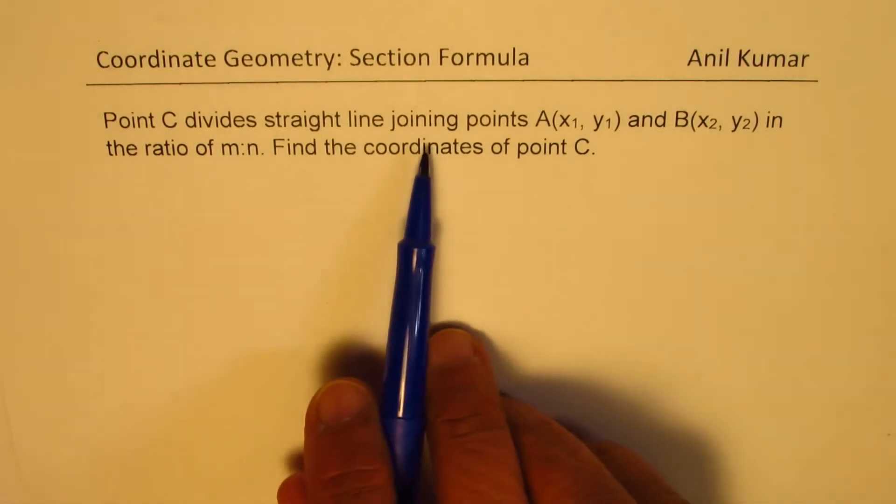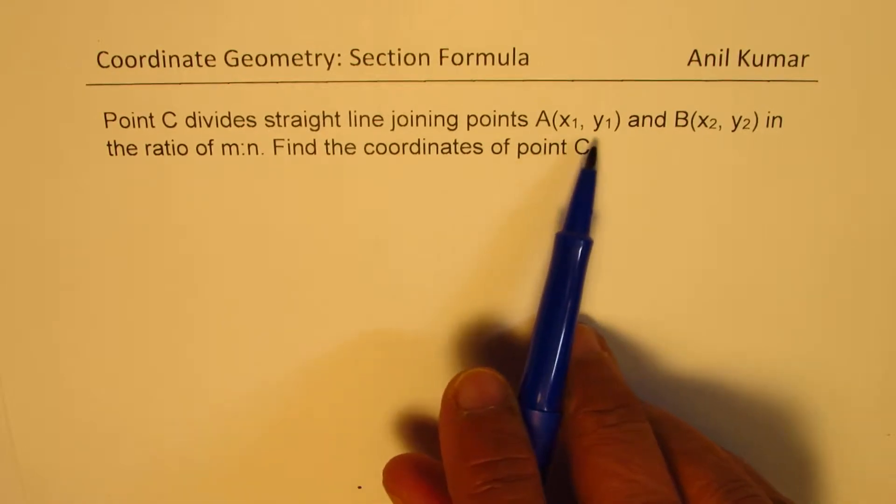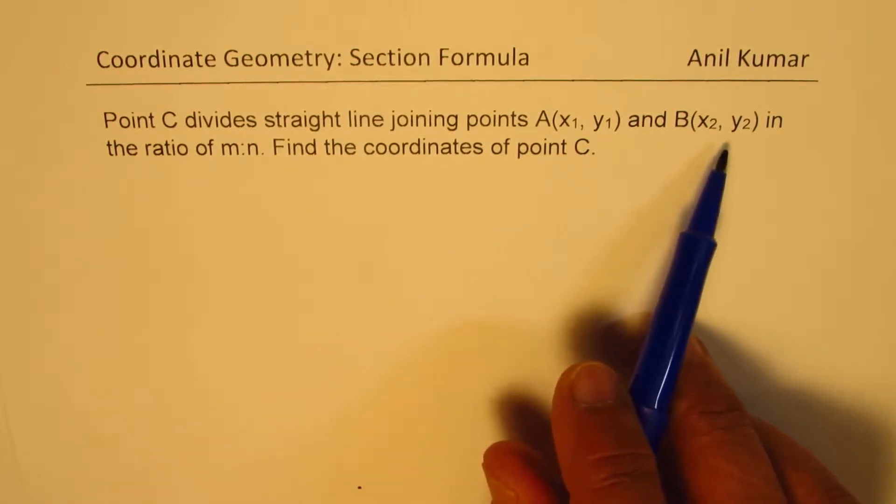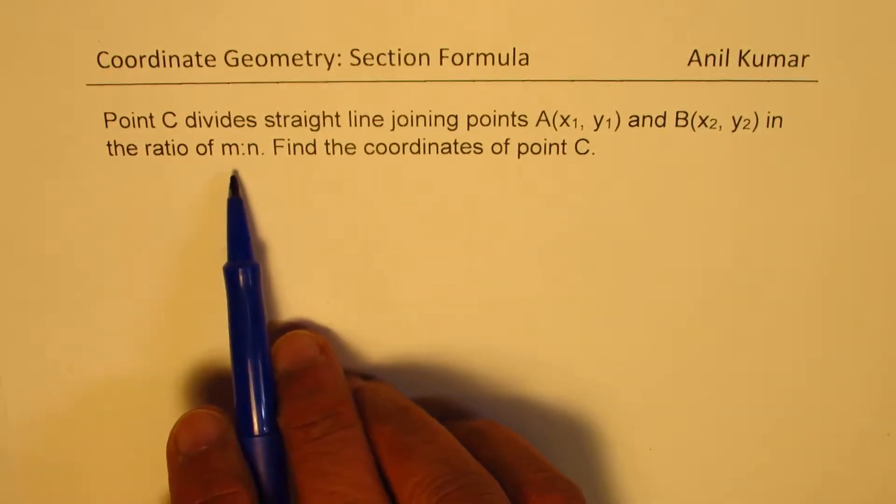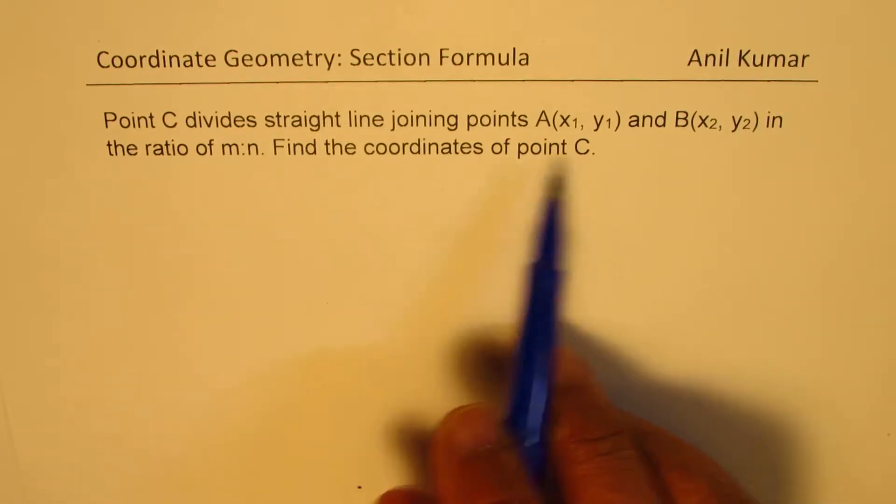Point C divides straight line joining points A(x1, y1) and B(x2, y2) in the ratio of m is to n. Find the coordinates of point C.